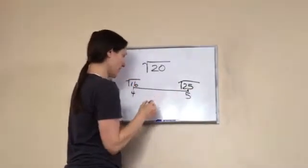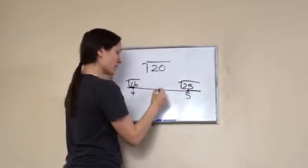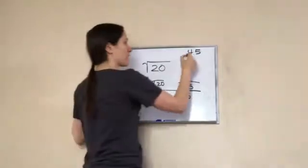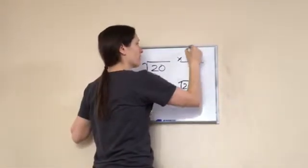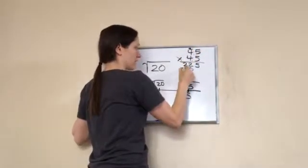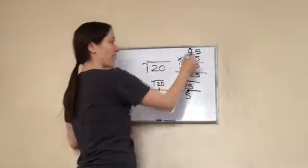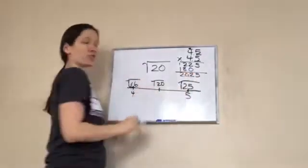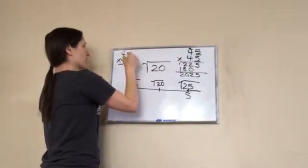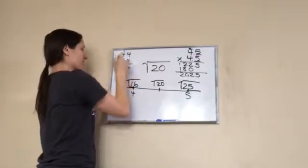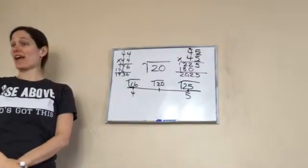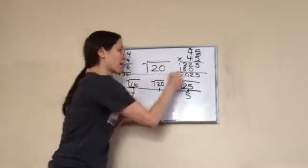If I draw this on a number line, this tick is 4 and this tick is 5 — somewhere in the middle is the square root of 20. Let's try 4.5: 4.5 times 4.5 is 20.25 — almost. Let's try 4.4: 4 times 4 is 16, working it out gives us 19.36. So we can't land on it exactly.